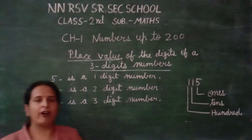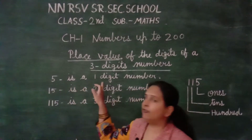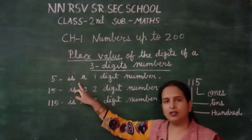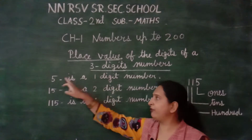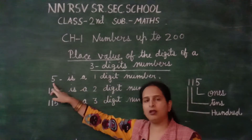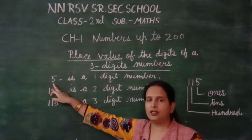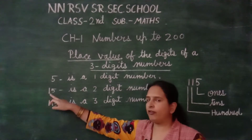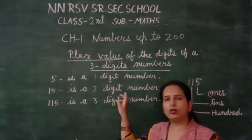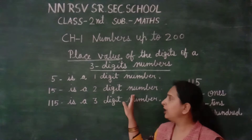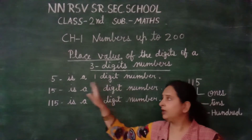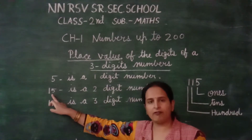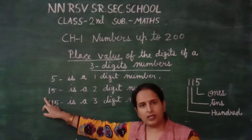Here, 5 is a 1-digit number. It means 5 is in the 1's place. Here is 15. 15 is a 2-digit number. It means 5 is in the 1's place and 1 is in the 10's place.